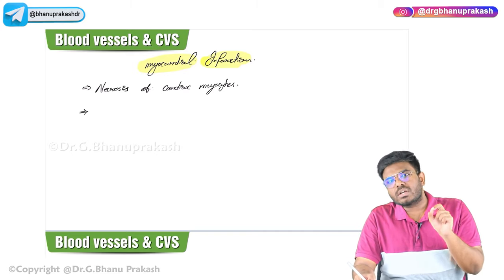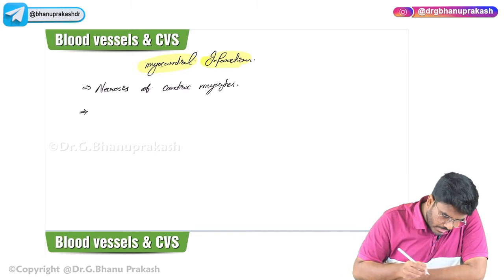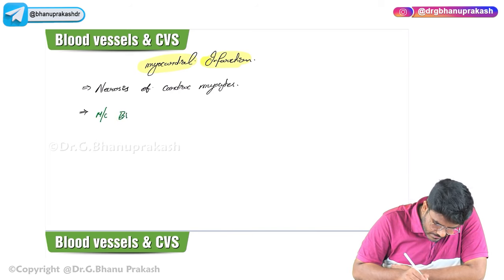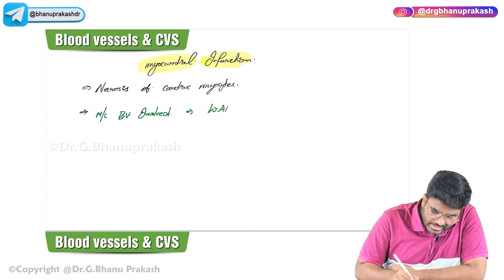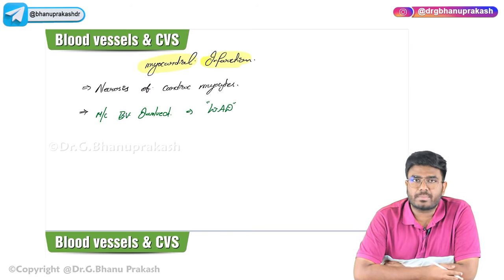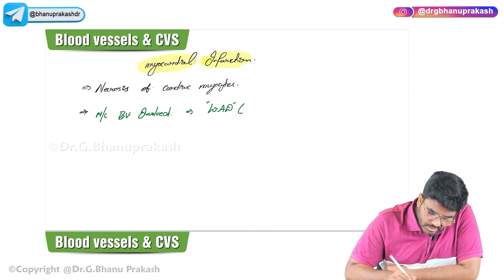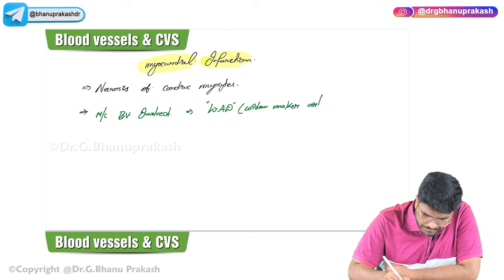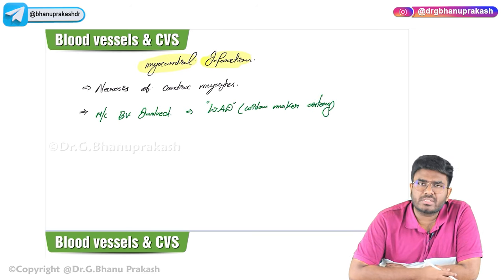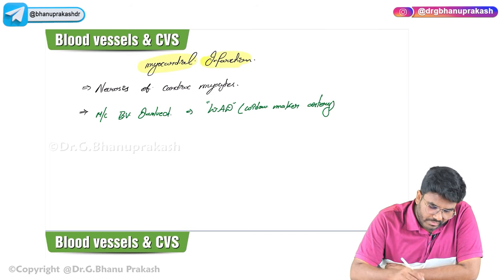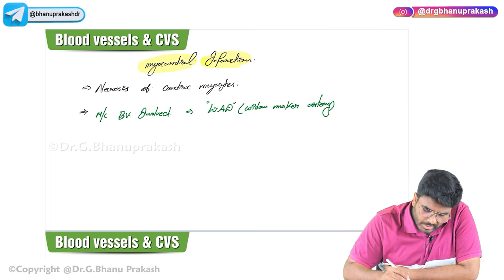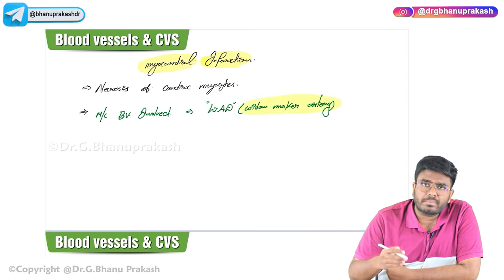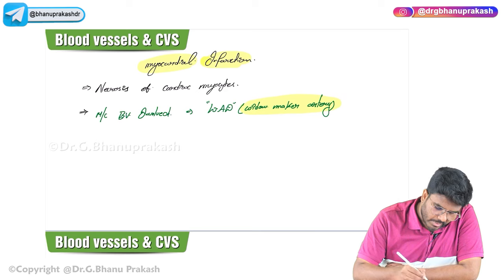Which blood vessel is most commonly involved in myocardial infarction? The most common blood vessel involved is the left anterior descending artery - the LAD - which is a branch of the left coronary artery. This LAD is also called the widow maker artery, because atherosclerosis and myocardial infarction are most commonly seen in males, making their female partners widows.